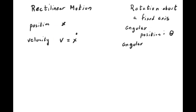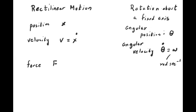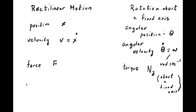Now suppose you rotate the dipole so it is no longer collinear with the external electric field. The net force is still zero — the forces on q and minus q are equal and opposite even when the dipole is rotated. But the net torque on the dipole is not zero.